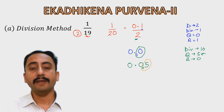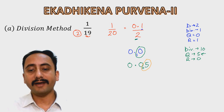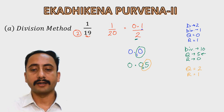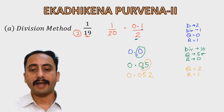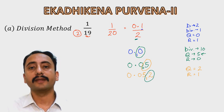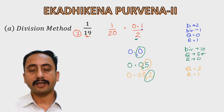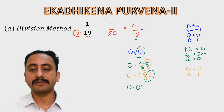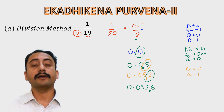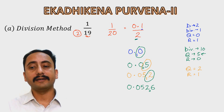Dividing 05 by 2: quotient is 2, remainder is 1. Next decimal digit is 2. The next dividend is 12. Dividing 12 by 2: quotient is 6, remainder is 0. Next decimal digit is 6. This process continues until we obtain a repeating decimal fraction. Dividing 6 by 2 gives 3 with remainder 0.